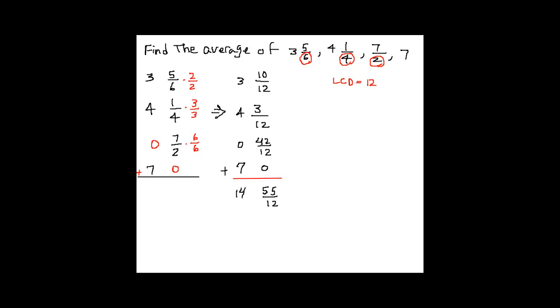Let's change this to improper fraction. So to divide, now we change it to the improper fraction. 14 times 12 plus 55, that gives you 223 over 12. And when you divide, you have to change division to multiplication and write the reciprocal of 4, which is 1 over 4. So 223 over 48 is the average.